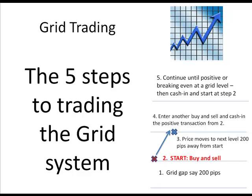You then start your grid trading system by buying and selling the same currency at the same time. We don't know what direction the market is going to move, so we buy and sell simultaneously. The third step is the price then moves by your grid size to the next level — from your start level to level one — and there is nothing to do as the price will get there by itself.